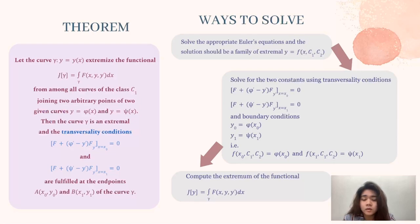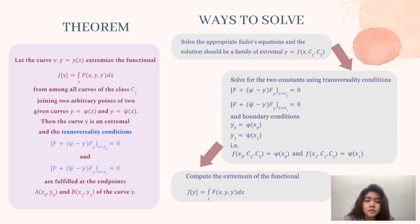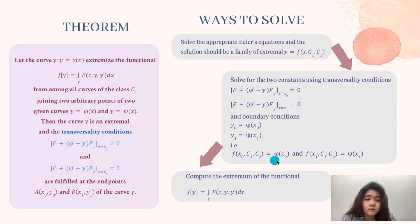To solve this elementary problem, first it is necessary to solve the appropriate Euler equations, and the solution should be the family of extremals y equals f(x, c1, c2). Then solve for the two constants using the transversality conditions and boundary conditions: y0 equals v(x0), y1 equals sin(x1), that is f(x0, c1, c2) equals v(x0) and f(x1, c1, c2) equals v(x1).